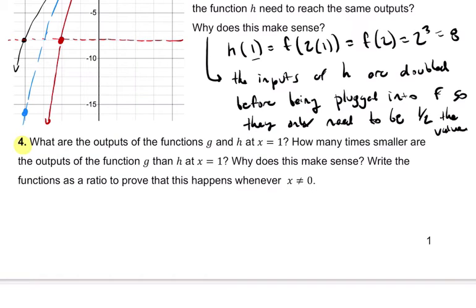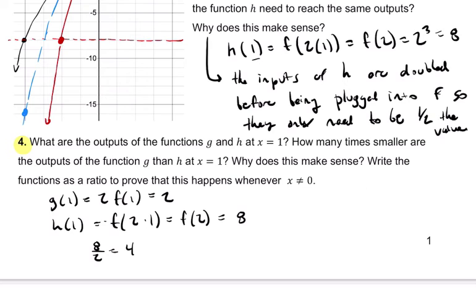Okay, number 4. What are the outputs of the functions g and h at x equals 1? Okay, well, g of 1, we did this already. That's twice f of 1, which is 2 times 1 cubed or 2. h of 1, however, is different. h of 1 is f of 2 times 1, which is f of 2, or 2 cubed, which is 8. And how many times smaller are the outputs of the function g than h at x equals 1? So 8 divided by 2 is 4. Therefore, it's 4 times smaller.